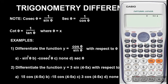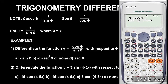Now input the function into the calculator. First bring out the differentiation symbol by pressing Shift then the integral button — it will appear as d/dx. We need to enter the function cos θ over sin θ, but there is no theta in the calculator, so we replace theta with x. To enter x, press Alpha then x — you must press Alpha first before x, otherwise it won't register.